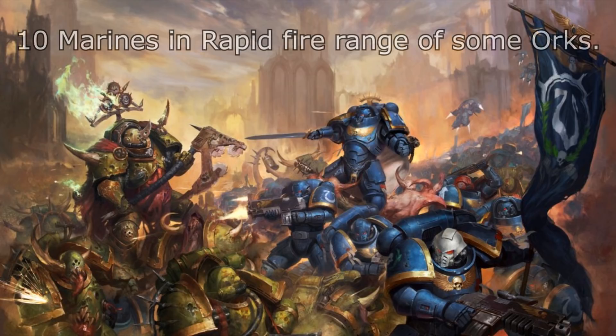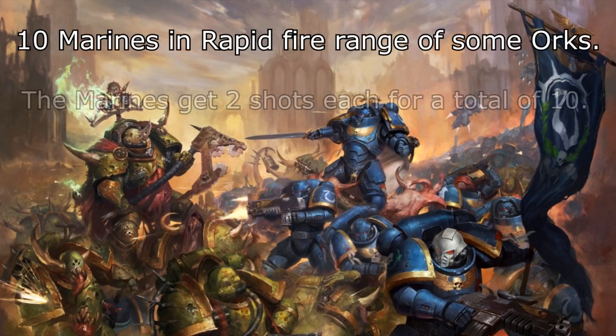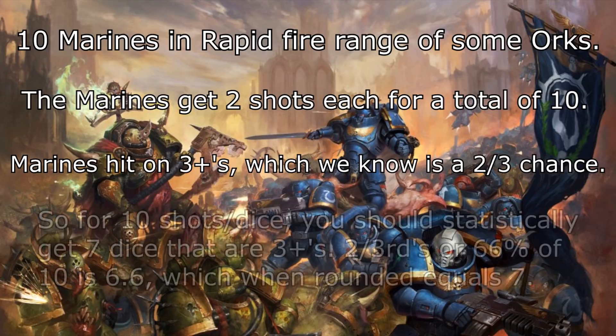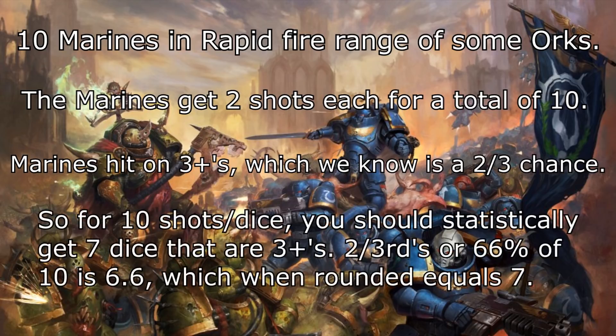You have 5 Space Marines in rapid fire range of 10 Ork Boys. While in rapid fire range, the marines get 2 shots each for a total of 10 shots. The marines hit on 3s, which is a 2 out of 3 chance that we've already discovered earlier. So every 2 out of 3 dice rolled should statistically be 3-pluses. With 10 dice, statistically you should have 7 that hit, because 2 out of 3, or 66%, of 10 is 6.6, and with rounding that equals 7. So with 10 bolter shots from the marines, 7 should hit.